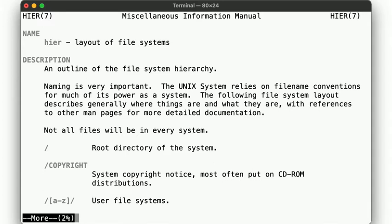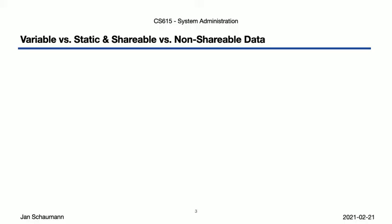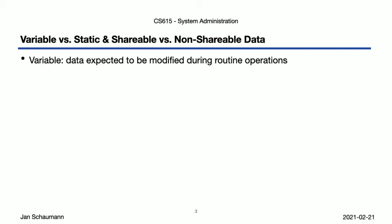But why would we care about having variable data under a separate directory or partition? To answer that, let's look at the definitions of different types of data. Variable data, as the name suggests, is data that is expected to be modified during routine operations. So that includes log files, as well as the data in the user's home directories, as we expect them to write to their files with some frequency. In contrast, we also have static data — data that is not expected to change during the normal course of operations. This includes pretty much all of your operating system files, your libraries and applications.